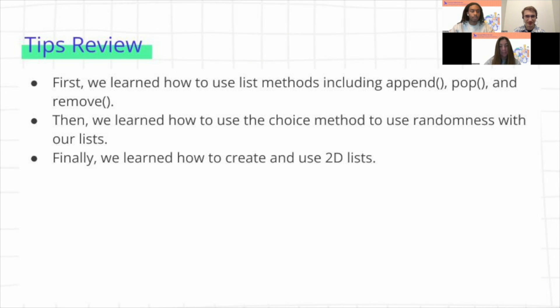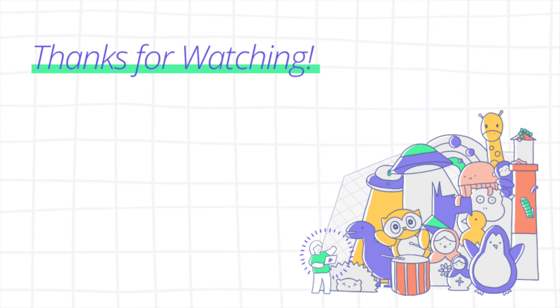Okay, so just to kind of sum up all the tips we've covered, we first learned how to use different list methods, including append, pop, and remove. And then next we learned how to use the choice method so that we could use randomness with our lists. And then finally, we learned how to create and use 2D lists. So thank you so much for watching, and happy CS Ed week.